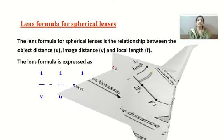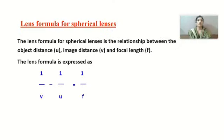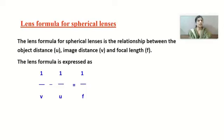Next is the lens formula for spherical lenses. The relation between object distance, image distance, and focal length is given by: 1/v − 1/u = 1/f. This is called the lens formula. Do not get confused between the mirror formula and the lens formula — you have to learn this carefully.